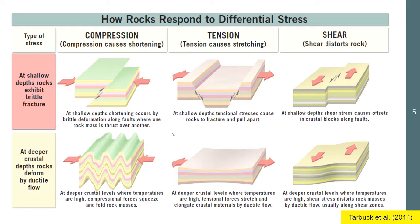These diagrams show us how rocks respond to differential stress. We have here the type of stress and the location where the stress occurs. Compression — being squeezed together — causes shortening of the rock mass. If compression occurs at shallow depths or very near the Earth's surface, shortening occurs by brittle deformation along faults.